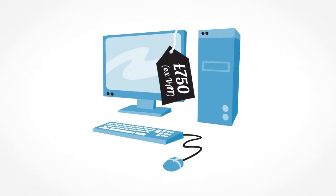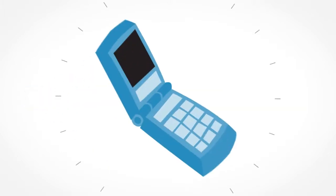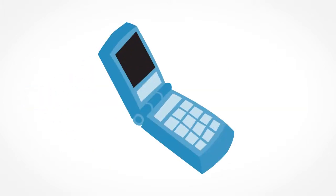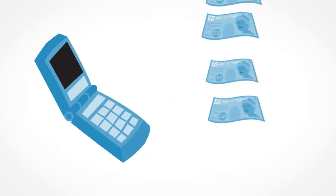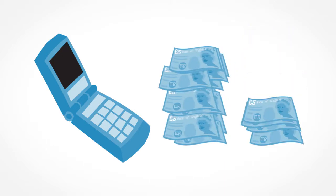VAT can be shown on top of a price if it's a business-to-business sale, and will be shown within the price if it's a direct-to-consumer sale. For example, a business sells a mobile phone direct to a consumer. The price is £120. If the rate of VAT is 20%, then the VAT included on this transaction will be £20.